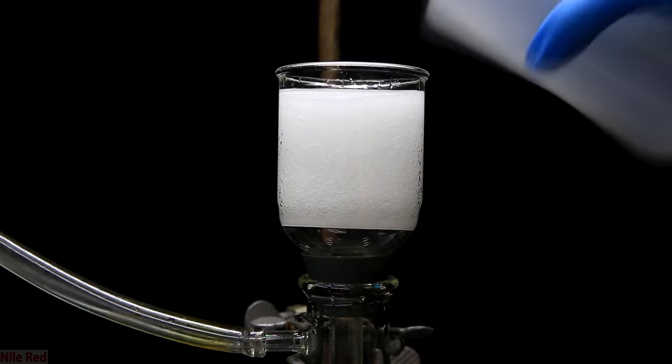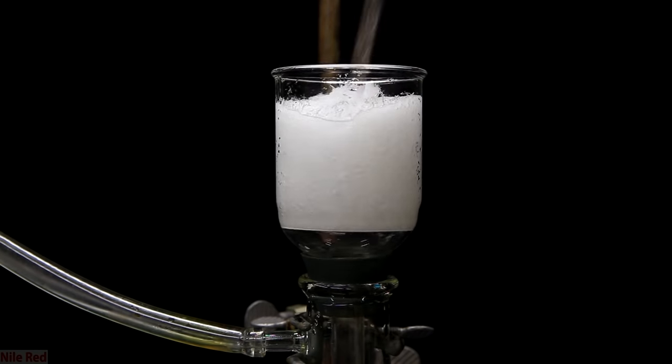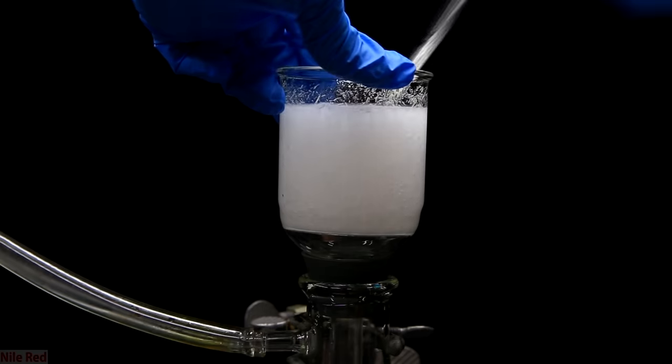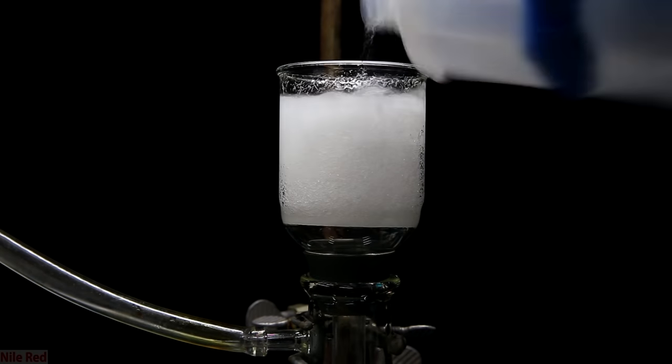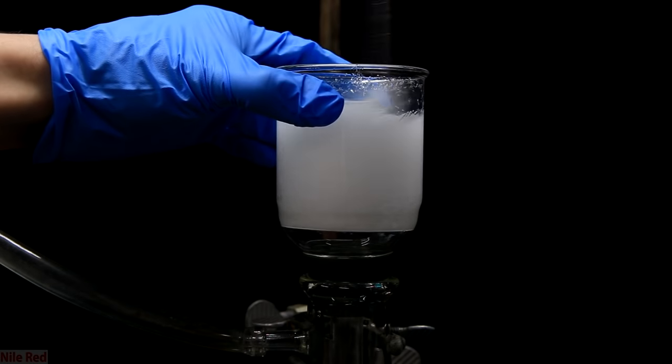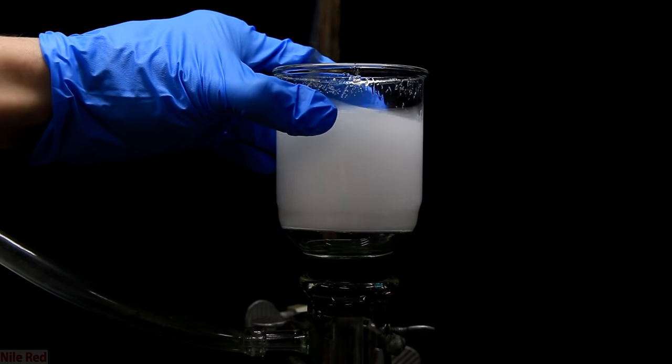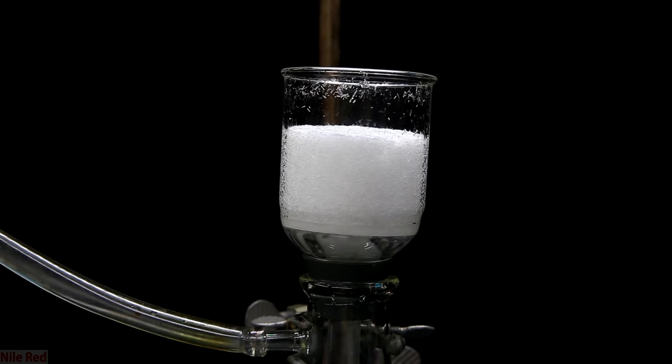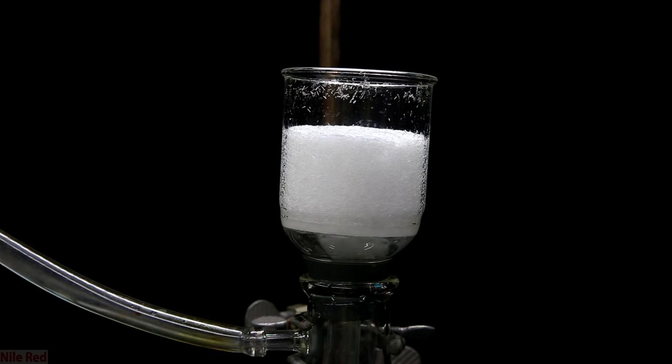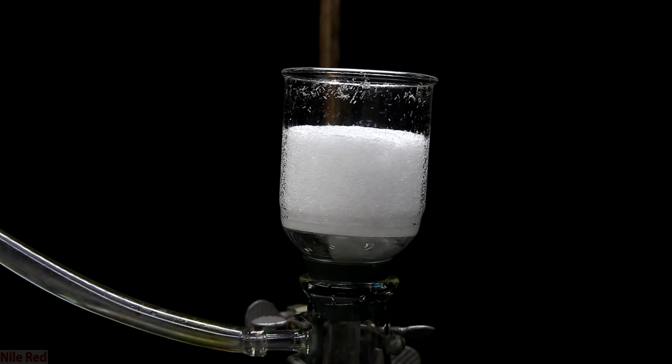Before taking it out though, we have to wash it with a little bit of ice cold ethanol. It's important to wash it a few times to get rid of the recrystallization solvent which contains impurities. Each time after the ethanol is added, using a metal spatula, it's thoroughly mixed to make sure that all of the crystals are washed. I decided to wash it a total of two times and after this, I pulled a vacuum on it to try to get out as much ethanol as possible.